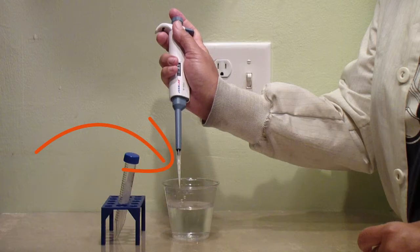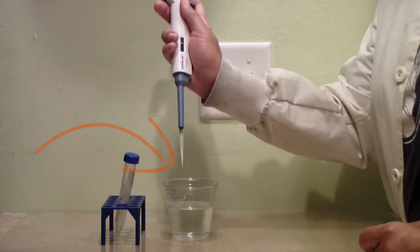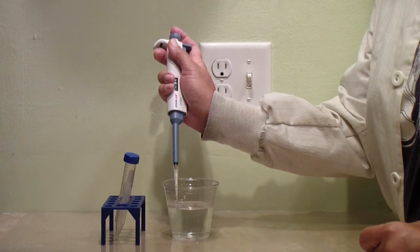To expel the liquid, touch the tip to the inside of the container, press down to the first stop and then all the way to the second stop.